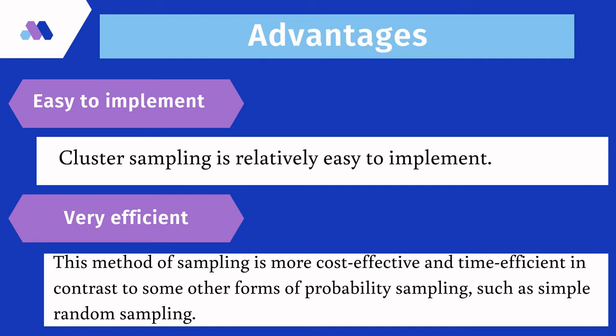But in case of simple random sampling, your data is scattered — you go to one place and then go to a different place. So in other words, cluster sampling is very efficient and it minimizes cost and time.